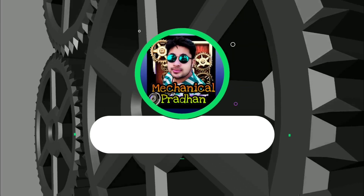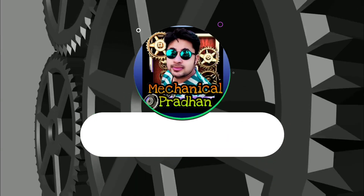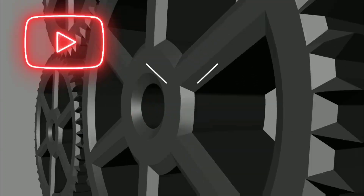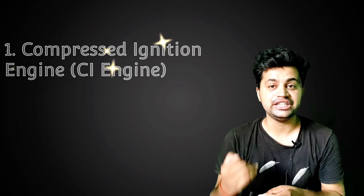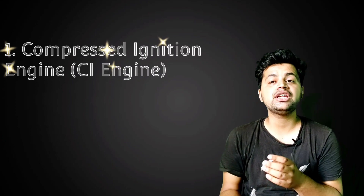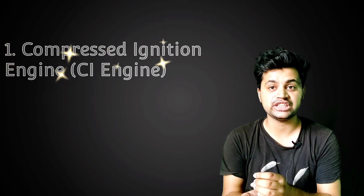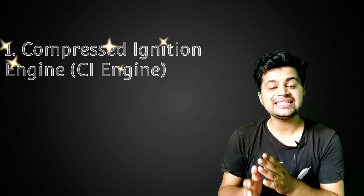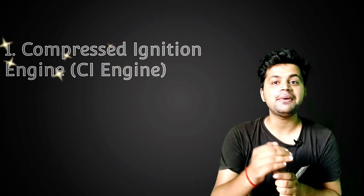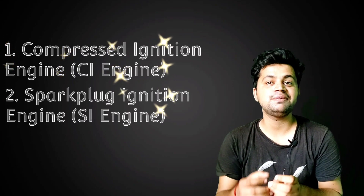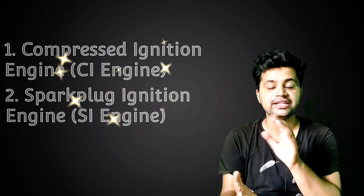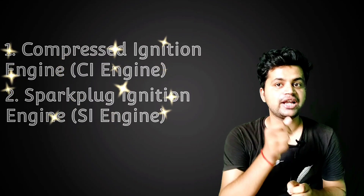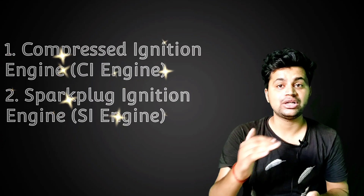First, let me explain the CI engine. We call it the Compressed Ignition engine — here the fuel is compressed to ignite. If we talk about the SI engine, it is the Spark Plug Ignition engine, meaning combustion in the cylinder happens via a spark. Let me explain the SI engine well.